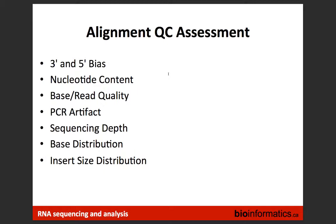Now that you have the BAM file and it's sorted, you want to find out if your library worked and if the alignment was good — alignment QC. You can run FastQC on a BAM file, but FastQC only checks sequence quality from sequencing, not how well the alignment was done. There is a tool called RSeQC that you can use to get all the alignment quality metrics, or you can implement these metrics yourself.